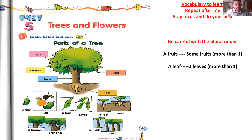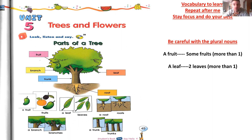Roots, a branch — branches, a trunk — trunks. So these are some new words to learn as part of the new vocabulary. Now, be careful with the plural nouns. For example, a fruit is a noun, a leaf is a noun, a root is a noun.